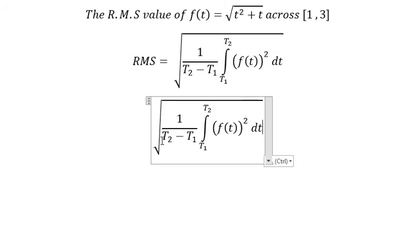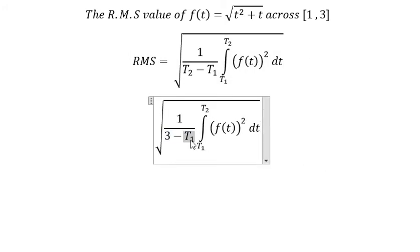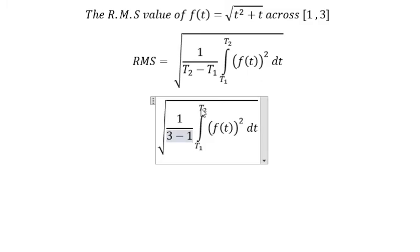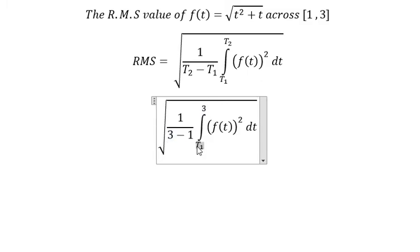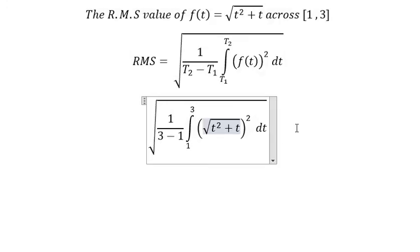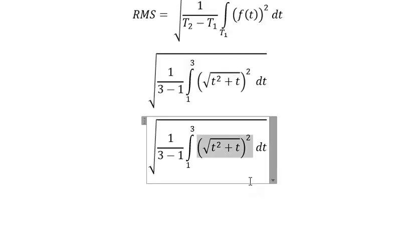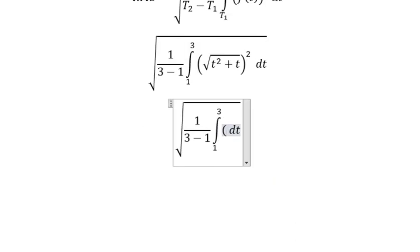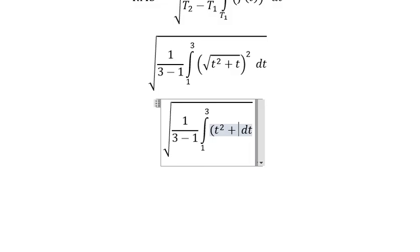So t number 2, that's about number 3. T number 1, that's about number 1. And the function, that is about this one - and we got about t square plus t.